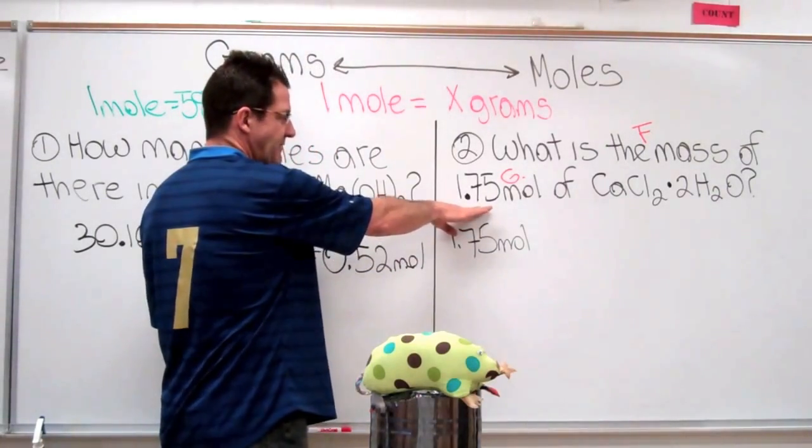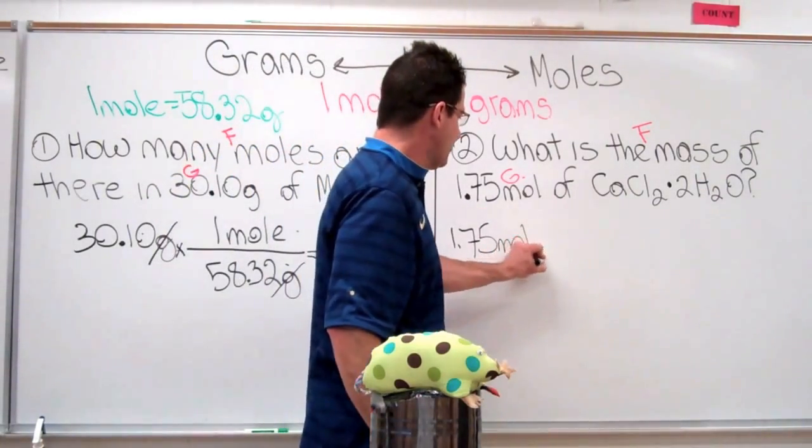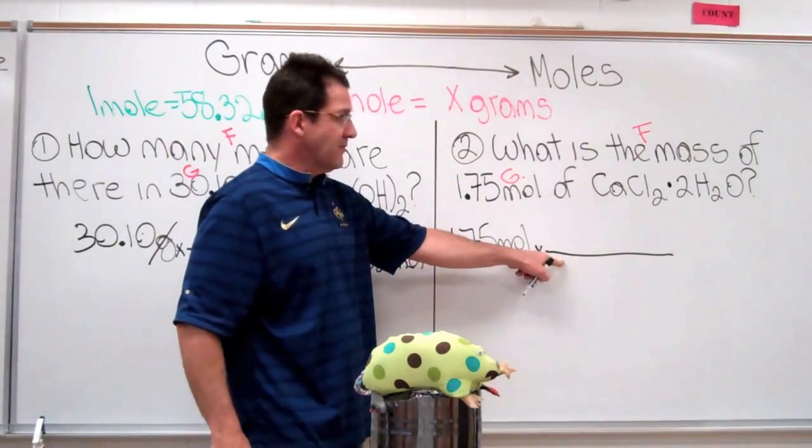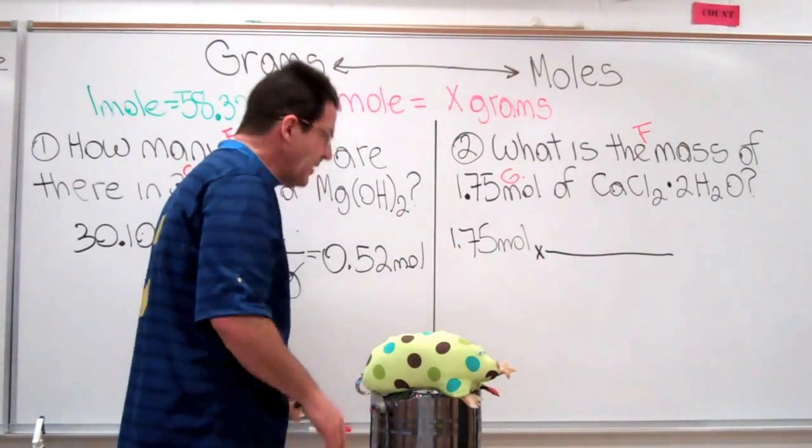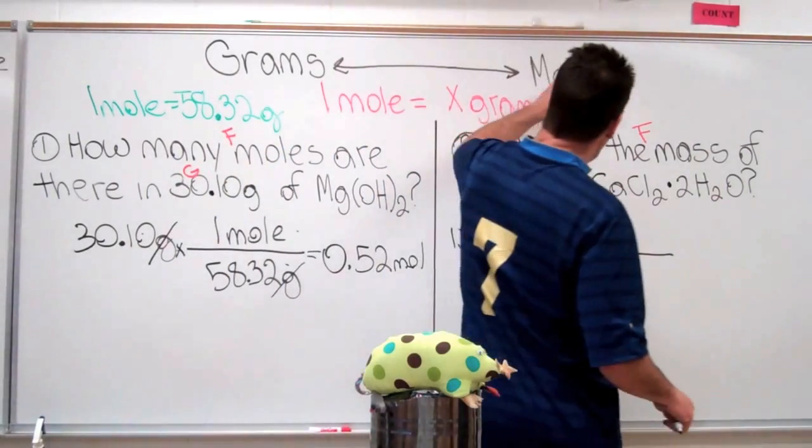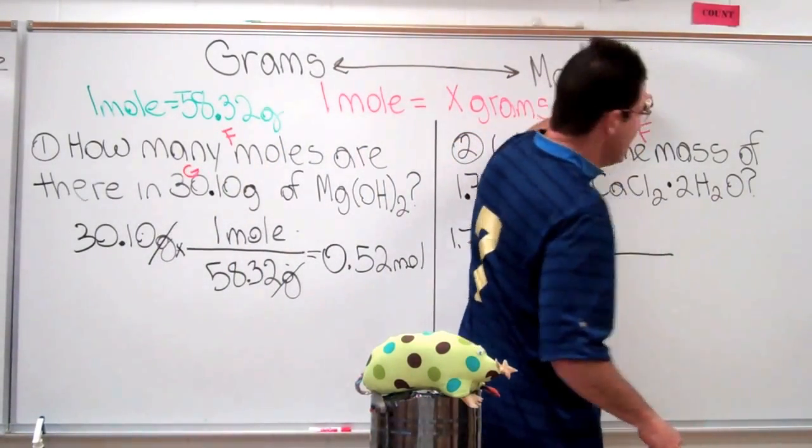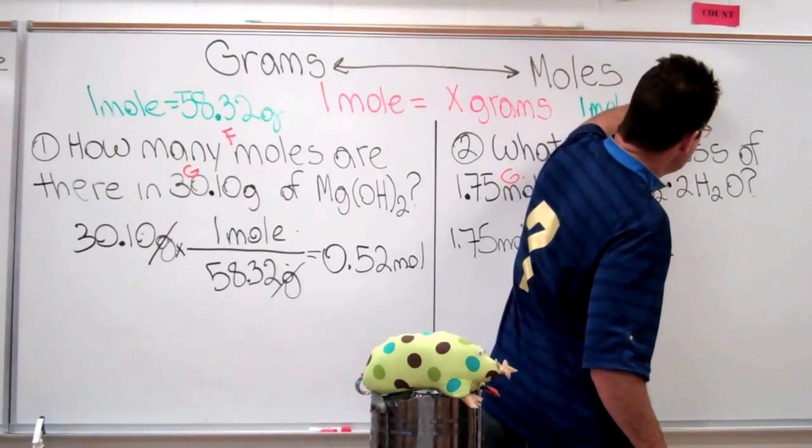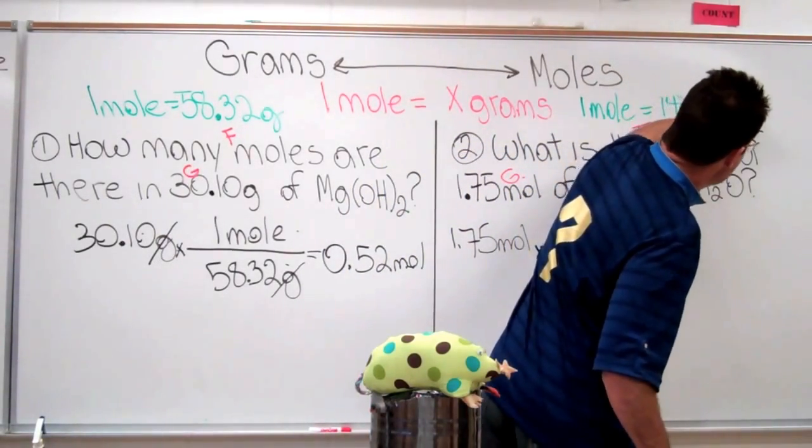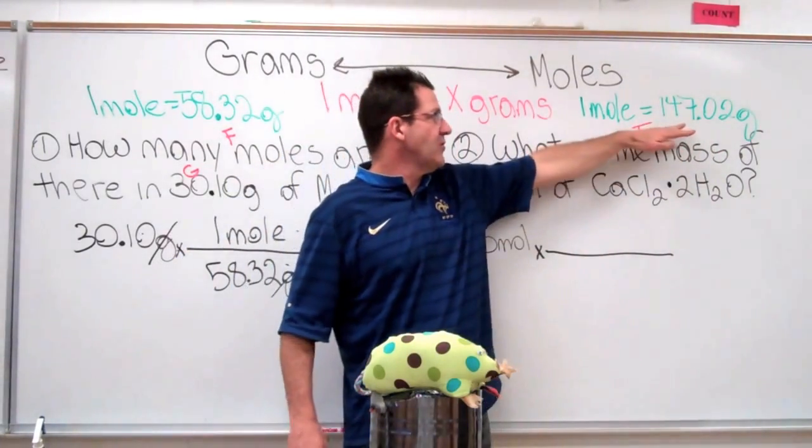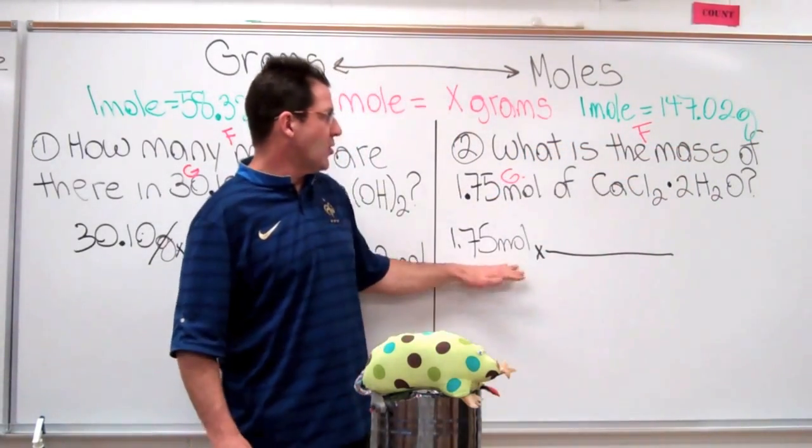Like that. I was given 1.75 moles. I'm going to put down my multiplication sign, my division bar. And the molar mass of calcium chloride dihydrate is that 1 mole is equal to 147.02 grams. That's my conversion factor. That is what I'm going to use to convert from moles to grams.